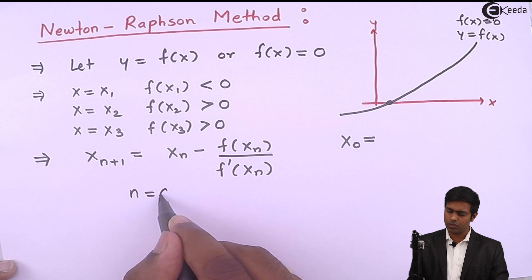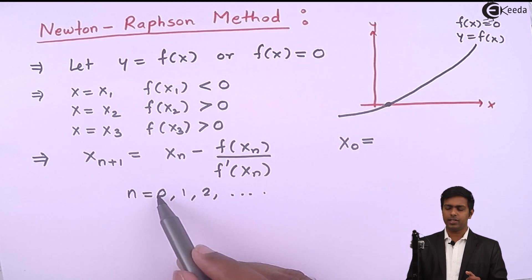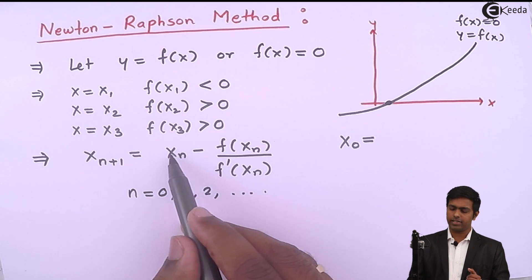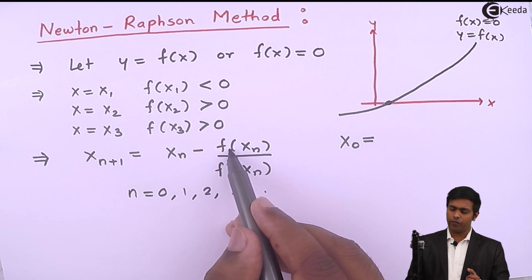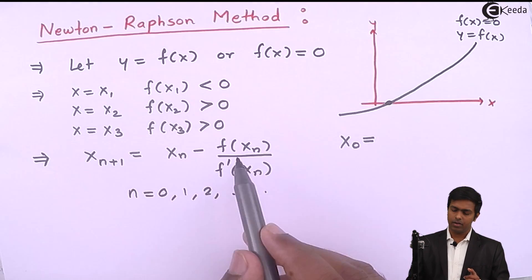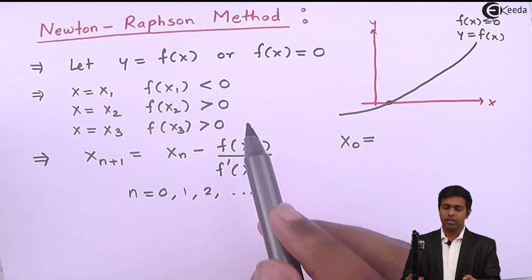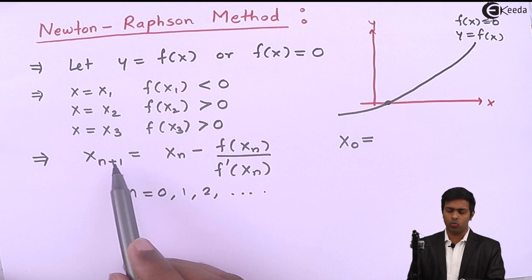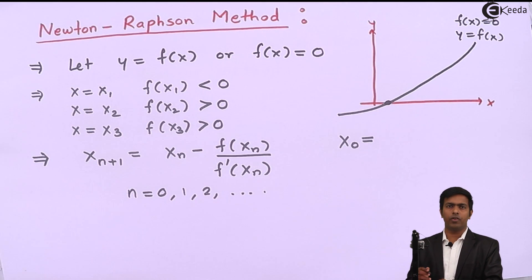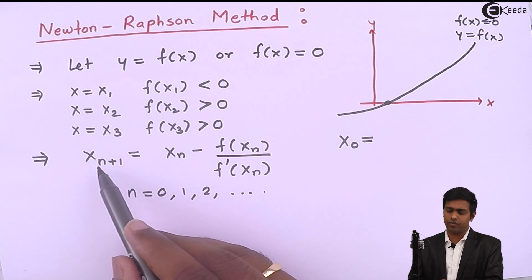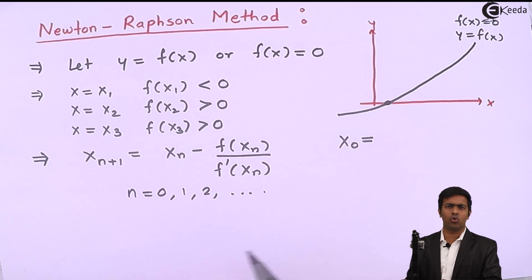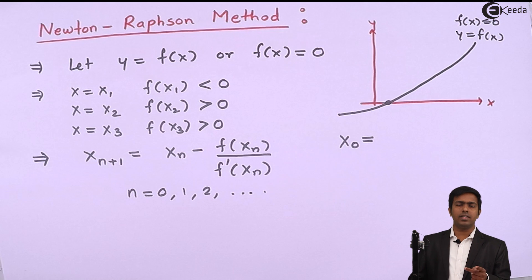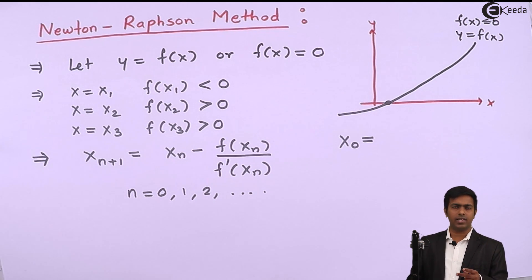In this formula we put n equal to 0, 1, 2, and so on. When n is 0, we get x1 equal to x0 minus f of x0 upon f dash of x0, where x0 is the initial root, f of x0 is the value of the function at x0, and f dash of x0 is the derivative of f at x0. We then use x1 in the next iteration to get x2, then x2 to get x3, and so on. We continue until two consecutive iterations give the same value, at which point we stop and call that value the root.